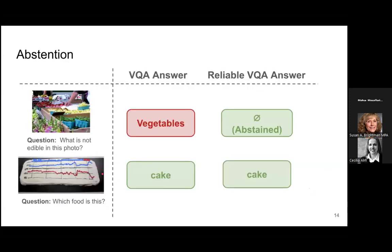An ideal case: when a VQA model answers a question incorrectly, a reliable model should abstain — saying 'I don't know.' When the model provides a correct answer, the reliable VQA model should provide that correct answer with high confidence.